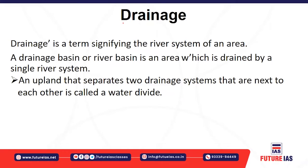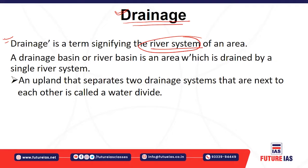Today we are going to start with drainage. Drainage is basically a term which refers to the river system of an area. For example, the Ganga River has its tributaries and distributaries. The drainage system means it will have its tributaries and distributaries in a particular area — the combined network is called the drainage system.